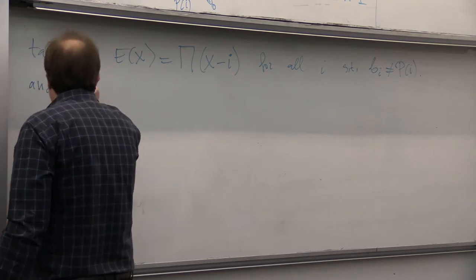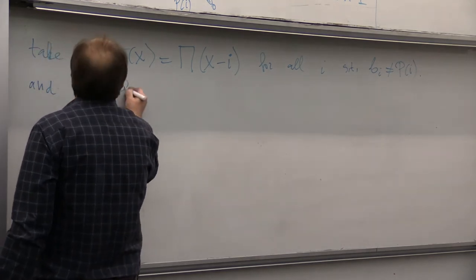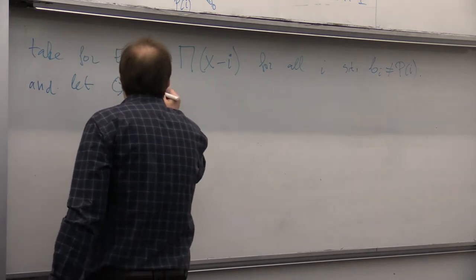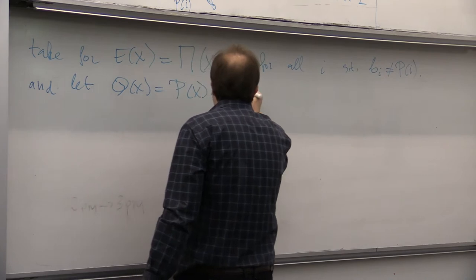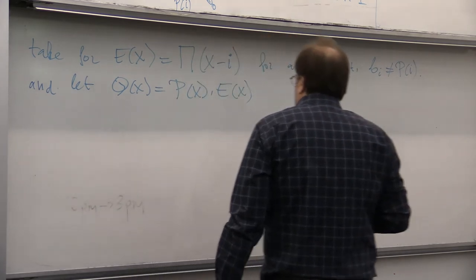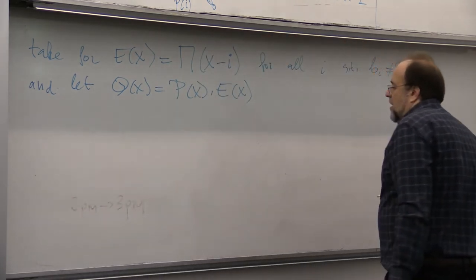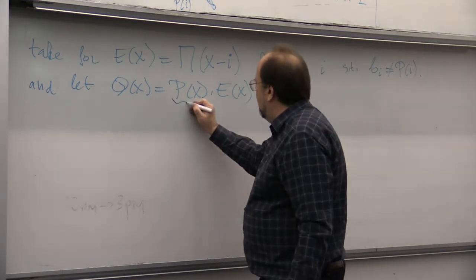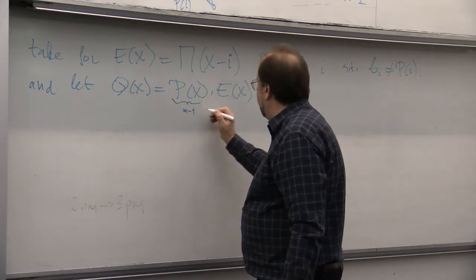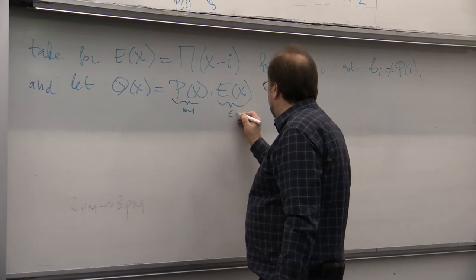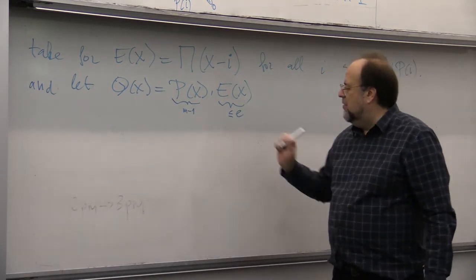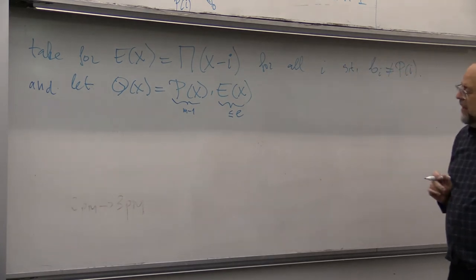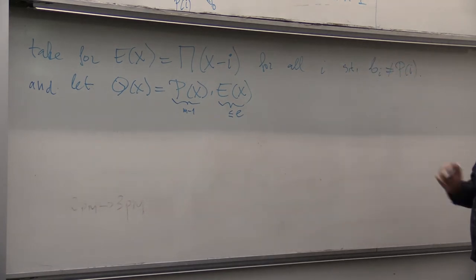And let Q of X be simply P of X times E of X. So, this is exactly of degree M minus one. This is at most degree E. So, we will have enough right values as you will see in the moment. So, let Q of X be equal to that.